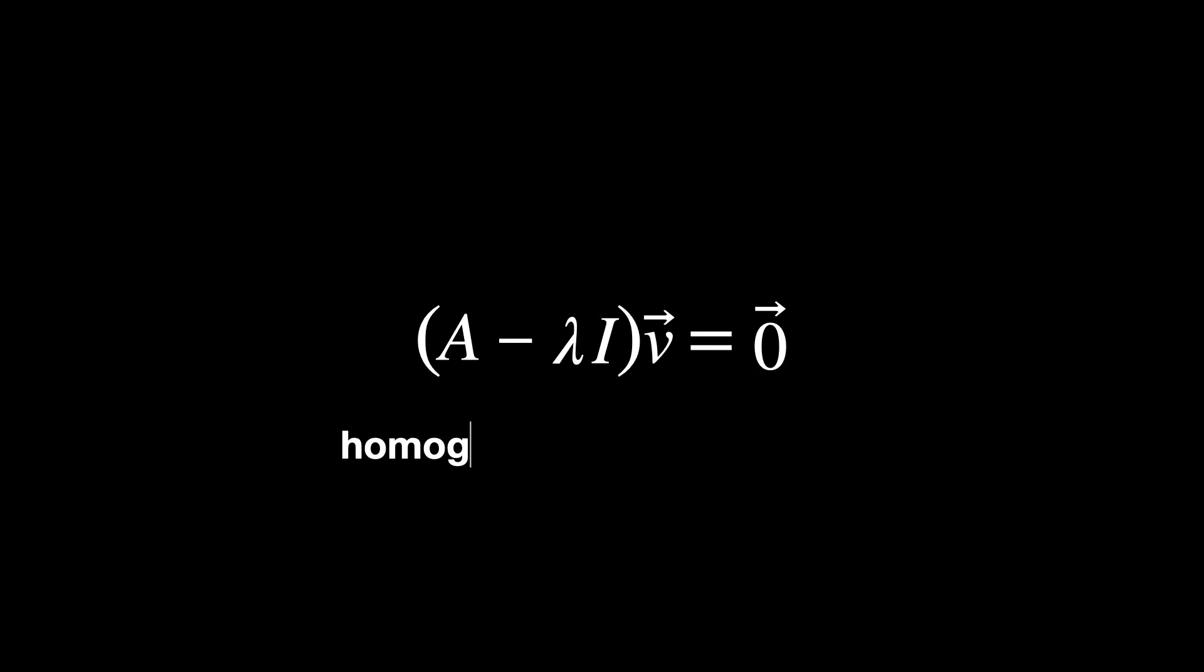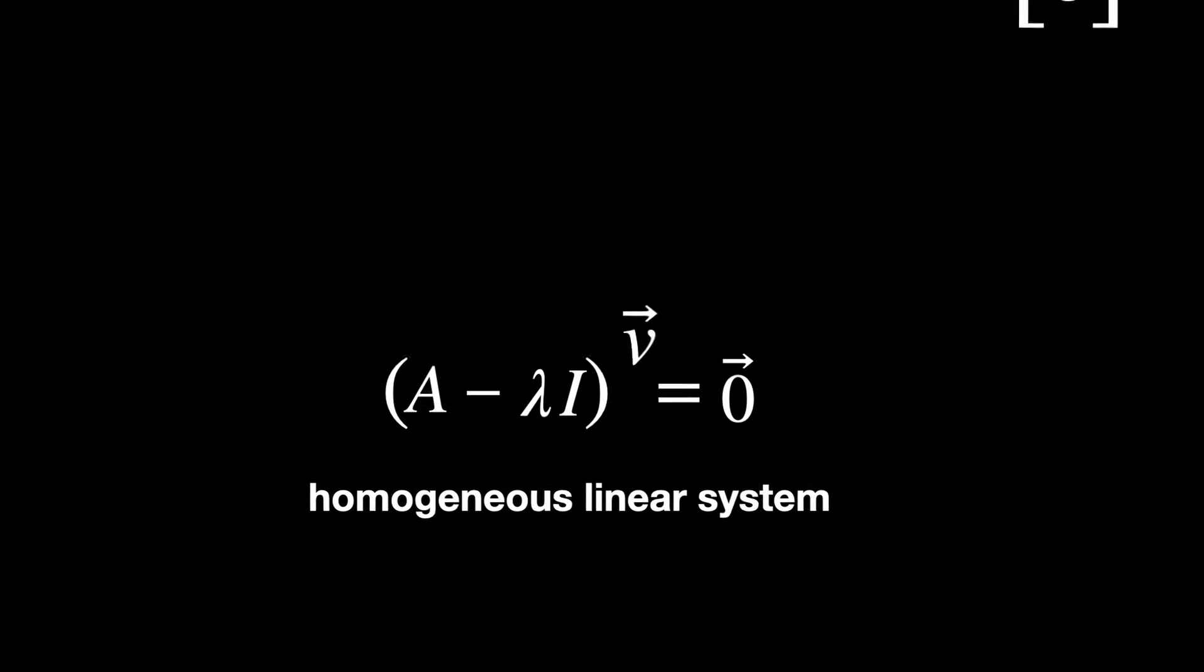This is a homogeneous linear system, and we will see why shortly. We want to find non-trivial solutions for this linear system, so solutions that are non-zero vectors.